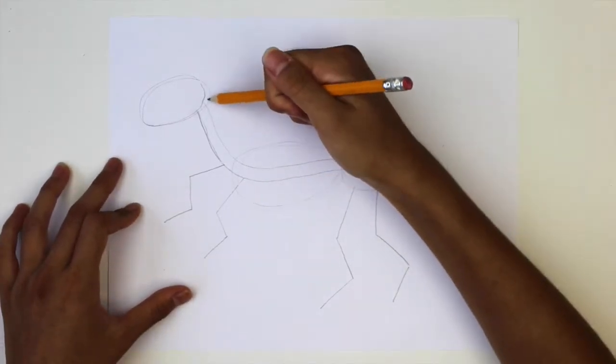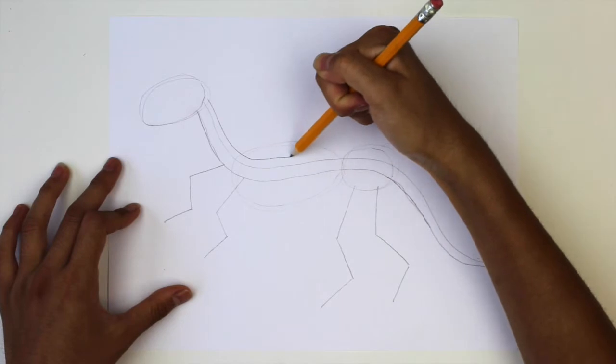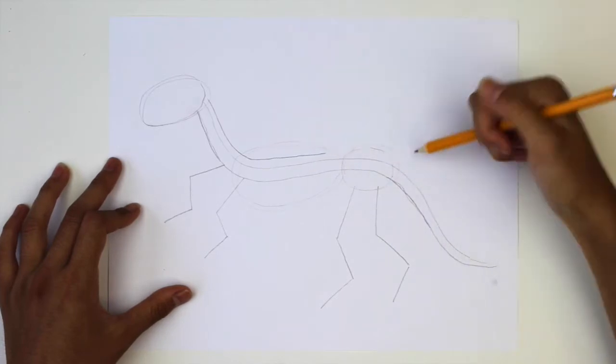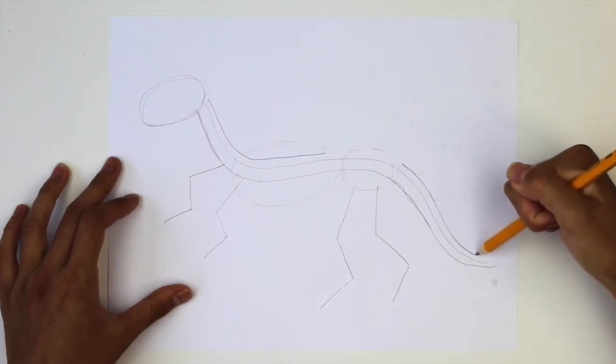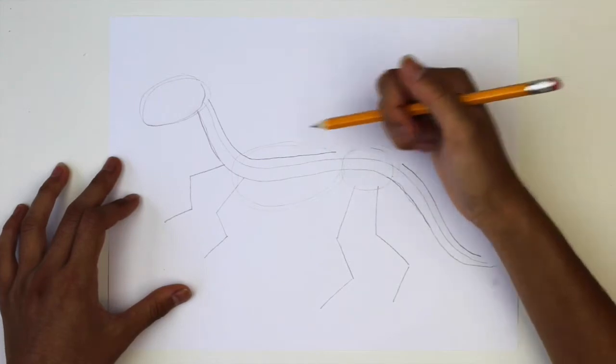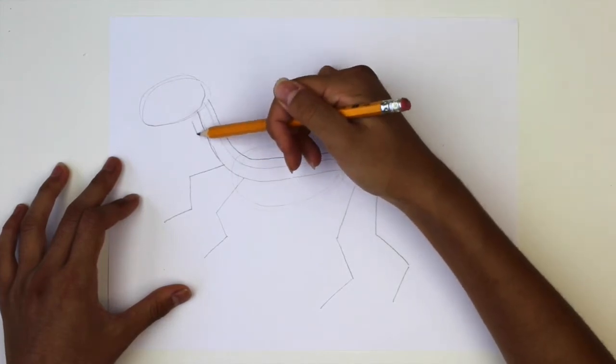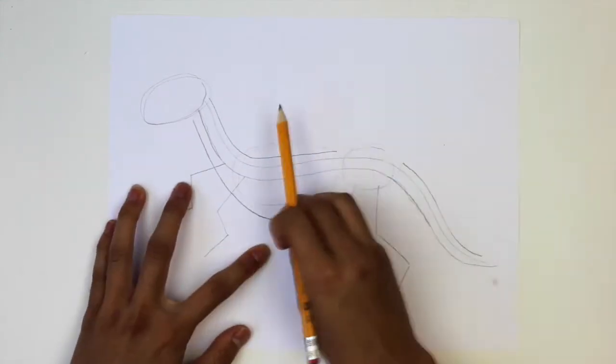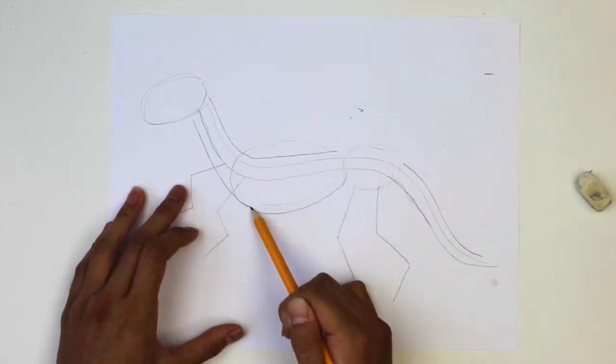Next we'll draw guidelines on each side of the spine to make it easier to draw the bones. Draw a line above the spine but close to it. Skip the area above the pelvis. Below the spine make the line come out at the ribs and grow closer again for the tail.